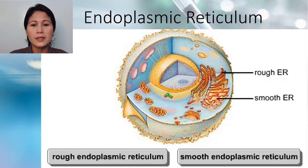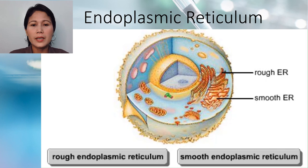Let's study first the endoplasmic reticulum. This is an organelle located near and around the nucleus and contains cisternae, which are flat sacs connected with the nuclear envelope. Endoplasmic reticulum is categorized into two types: the rough endoplasmic reticulum and the smooth endoplasmic reticulum.